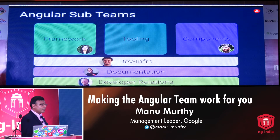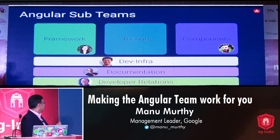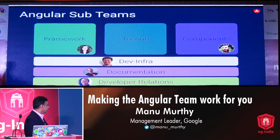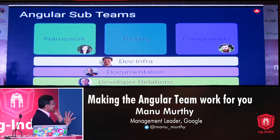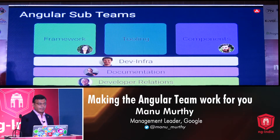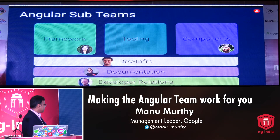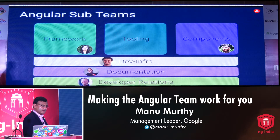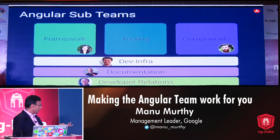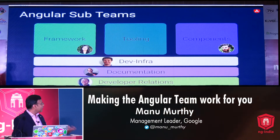I want to provide a peek into how the Angular team within Google is organized. We have various sub-teams: the three main ones are Framework, led by Kara Erickson as technical lead; the Tooling team, for which we are in the process of hiring a technical lead; and Components, which is led by Jeremy Elborn. We also have horizontal functions such as dev infrastructure, which deals with our continuous build environment; documentation, headed by Dave Shevitz; and developer relations, headed by Stephen Fluen, with Rob Minko also part of that group.